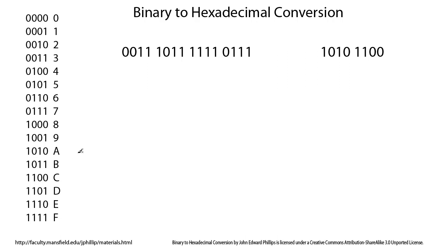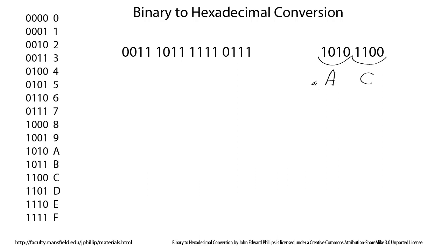Once you have that table written out, the conversion is very simple. Here's an eight-bit binary number. Start on the right-hand side and count over four bits — just break your number up into separate four-bit patterns, starting on the right. You can fill in leading zeros to make it a four-bit number if needed. We have the pattern 1100 — look that up on your table — that's the symbol C. And then 1010 — find that on the table — and you see that's the symbol A. And so that's it; we've converted our binary number into hexadecimal.